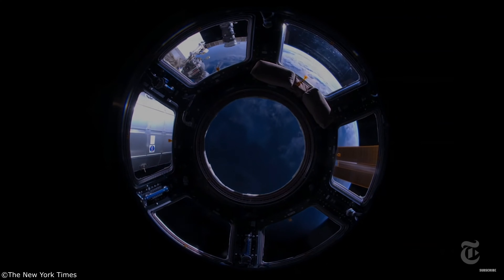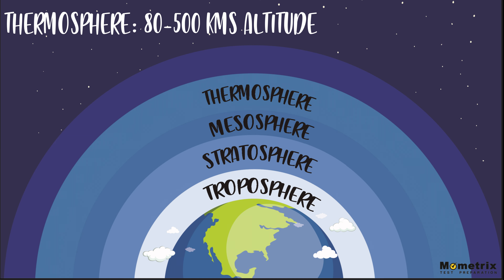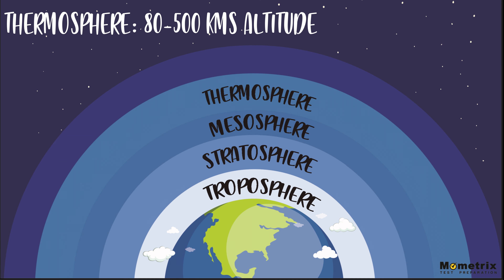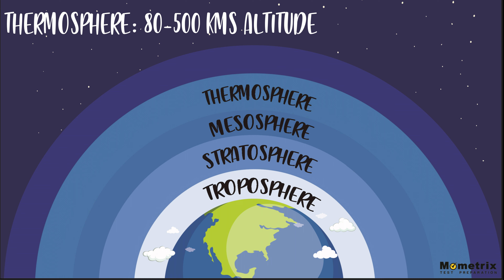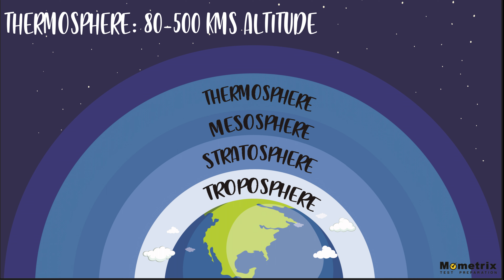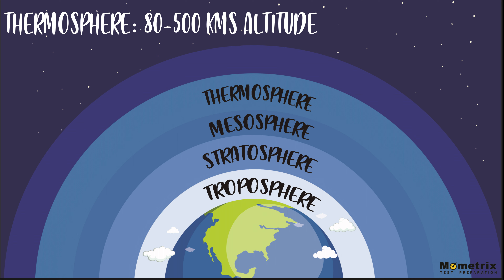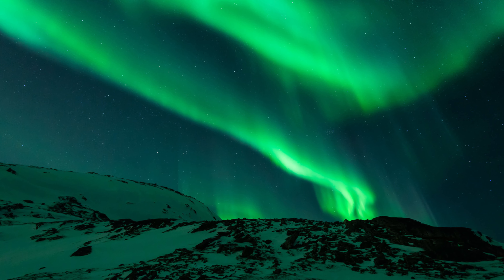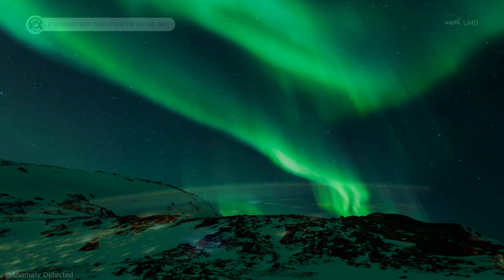The thermosphere extends between 80 and 500 kilometers. In this layer, there are many satellites, and it is also where the International Space Station is located, situated at an altitude of about 350 kilometers above Earth's surface. As you can see, the space station is not actually high enough to be in space, but instead it's in one of the upper layers of the atmosphere. However, that doesn't mean you can breathe around the ISS — the air concentration is so low that breathing is completely impossible. In fact, the space station is so close to Earth that from time to time it has to turn on its engines to move away with a small push, so it avoids falling back towards Earth and burning up like one of those meteorites.